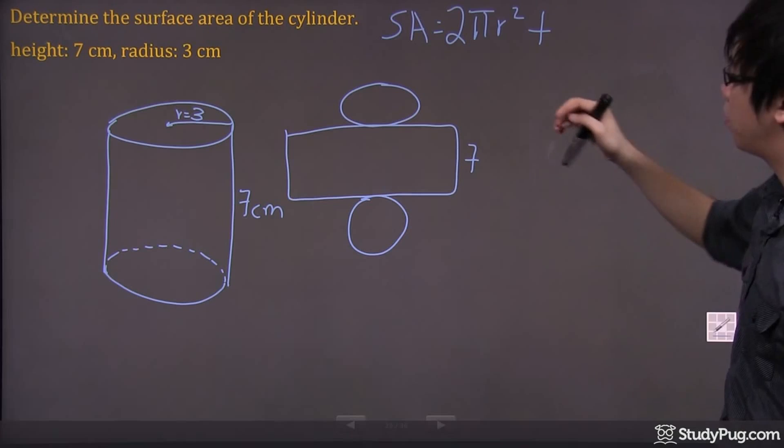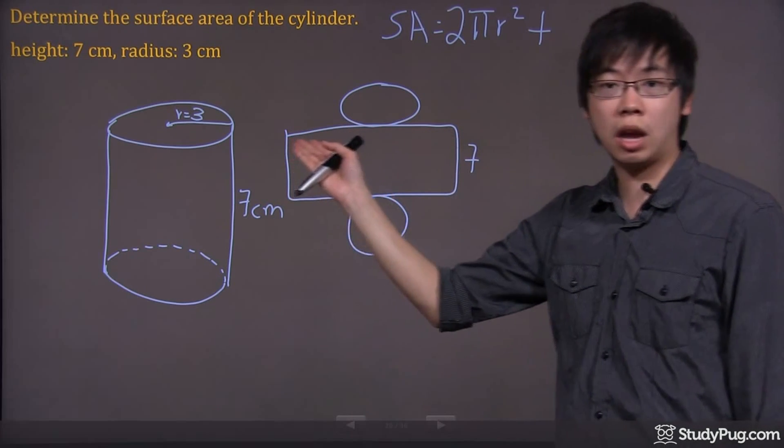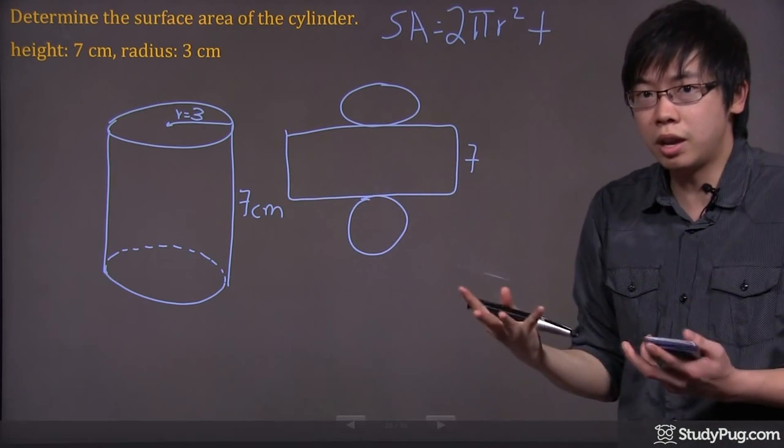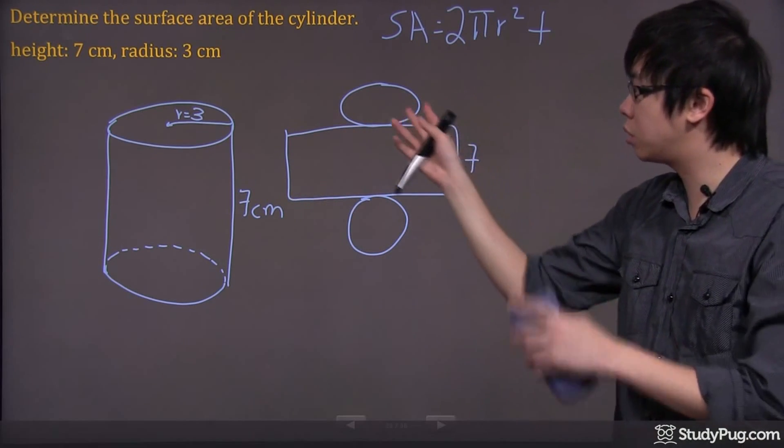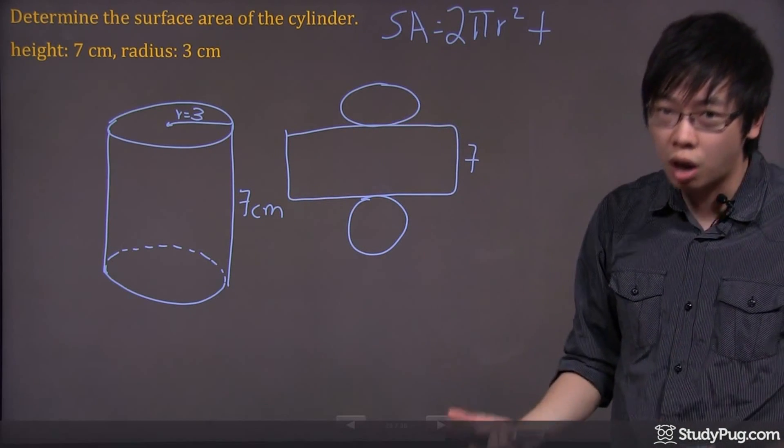It's just going to be the height, but it's going to multiply this side right here, which is the length. But where is the length? Imagine if you wrap it around the circle. That wrapping around the circle is actually the circumference.